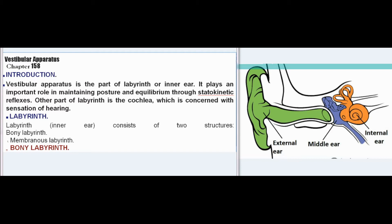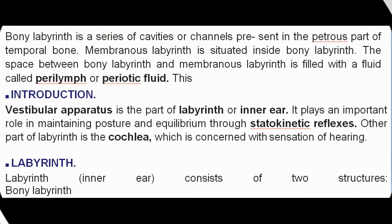The labyrinth, or inner ear, consists of two structures: the bony labyrinth and the membranous labyrinth. The bony labyrinth is a series of cavities or channels present in the petrous part of the temporal bone. The membranous labyrinth is situated inside the bony labyrinth. The space between them is filled with a fluid called perilymph, or perilymphatic fluid.